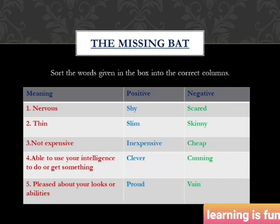The vocabulary part of 'The Missing Bat' discusses an exercise on page 6. The task is to write both a positive and a negative meaning of the same word. The first word is 'nervous' — its positive meaning is 'shy' or 'timid,' and its negative meaning is 'scared.' The next word is 'thin' — its positive meaning is 'slim' and its negative meaning is 'skinny.'